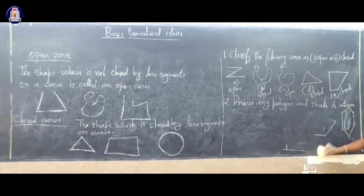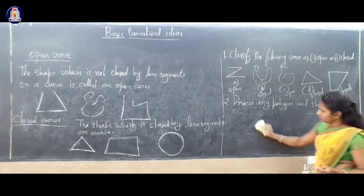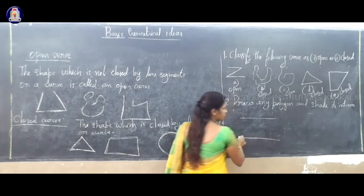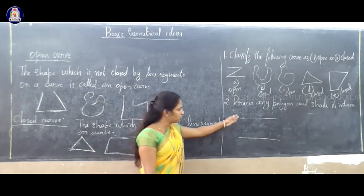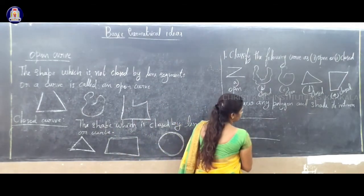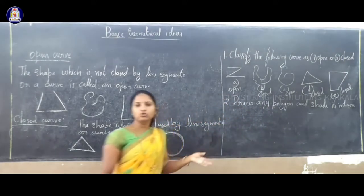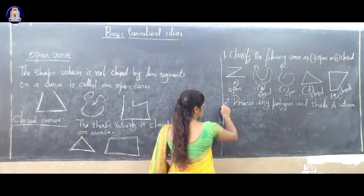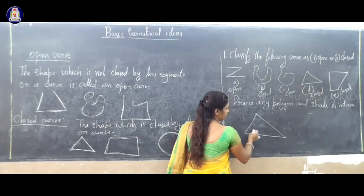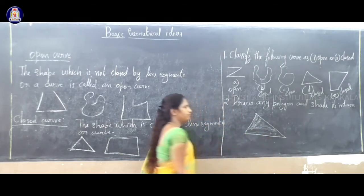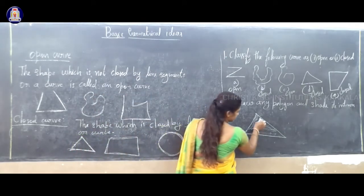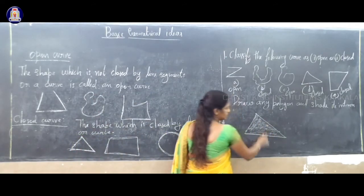Polygon means that is a closed figure, a closed line figure. Suppose if you consider two line segments — can you draw a polygon? No, we cannot get any polygon with two line segments. You should have more than two line segments to draw a polygon. Draw a triangle — that is the example of a polygon — and shade its interior inside the triangle.